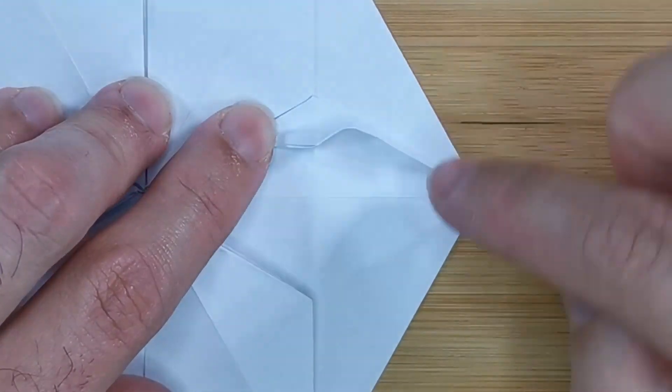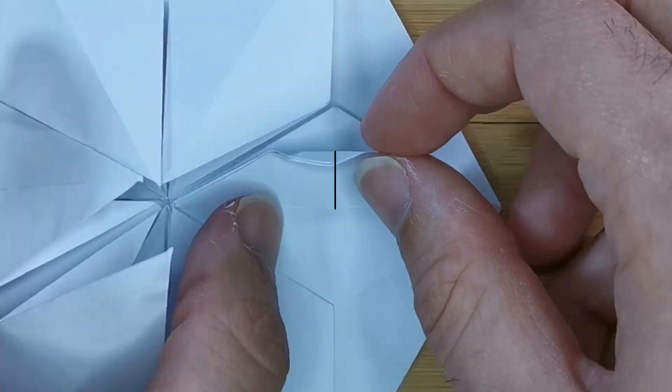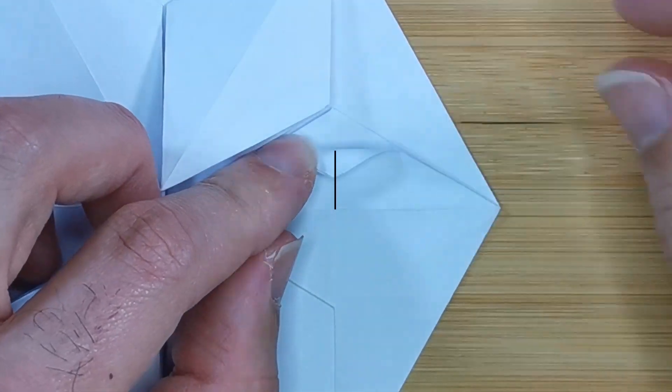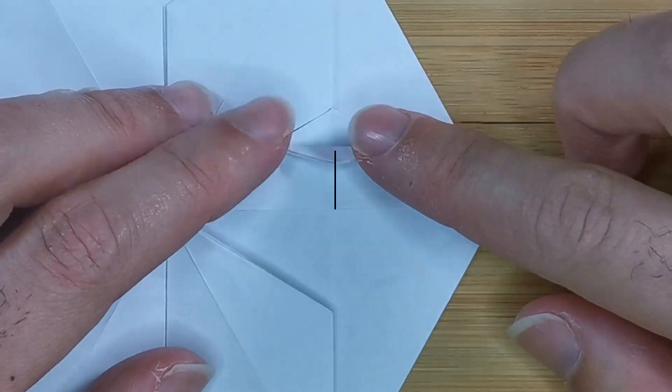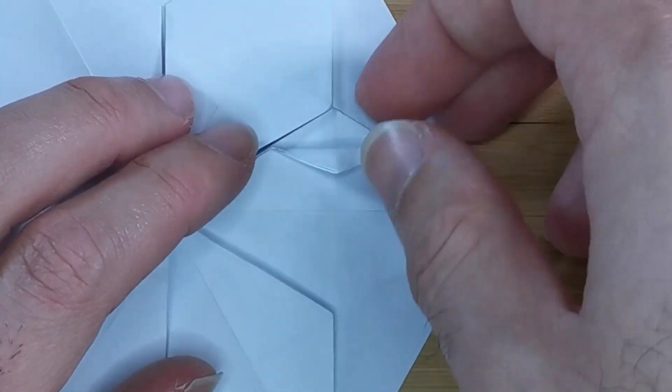Then using this pinch mark as a reference, align this point with the crease and starting from the pinch mark we just made make a crease.